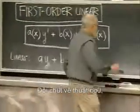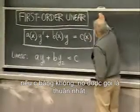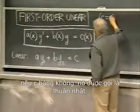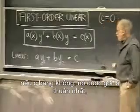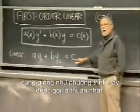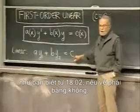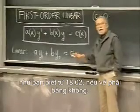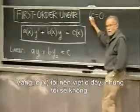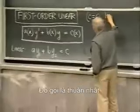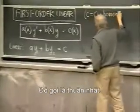A little bit of terminology. If c is equal to zero, it's called homogeneous — the same way this equation is called homogeneous, as you know from 18.02, if the right-hand side is zero. So c of x I should write here. That's called homogeneous.